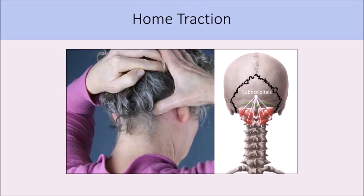The bone that you just felt with your thumbs — your occiput bone — is where all the suboccipital muscles attach, here on the right-hand side. You can see they're very short, maybe only an inch or two. They attach to the top couple of vertebrae and right up under the skull bone where you were just palpating or feeling with your thumb.